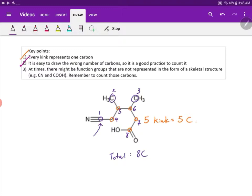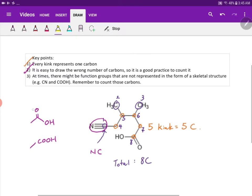And also at times, there might be functional groups that are not represented in its skeletal structure. So in this case, this group here can be written as CN instead. And COOH might be written in this form or it might just be written as COOH. So once you see this, just count the carbons respectively.